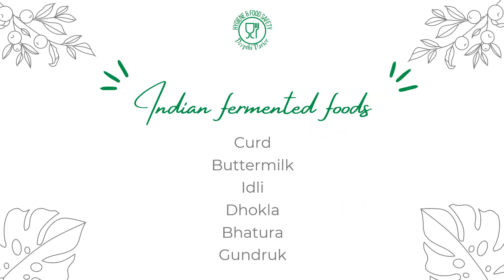There are also many different types of Indian fermented foods. For example, curd and cultured buttermilk are specialty fermented dairy products. Idli is produced by fermentation through the action of bacteria and yeasts. We also have dhokla and bhattura, all produced by the action of bacteria or yeasts on flour, dairy products, rice, or cereals. Gundruk is a Nepali specialty also produced by bacterial action. These are some examples of fermented foods found in the Indian region.